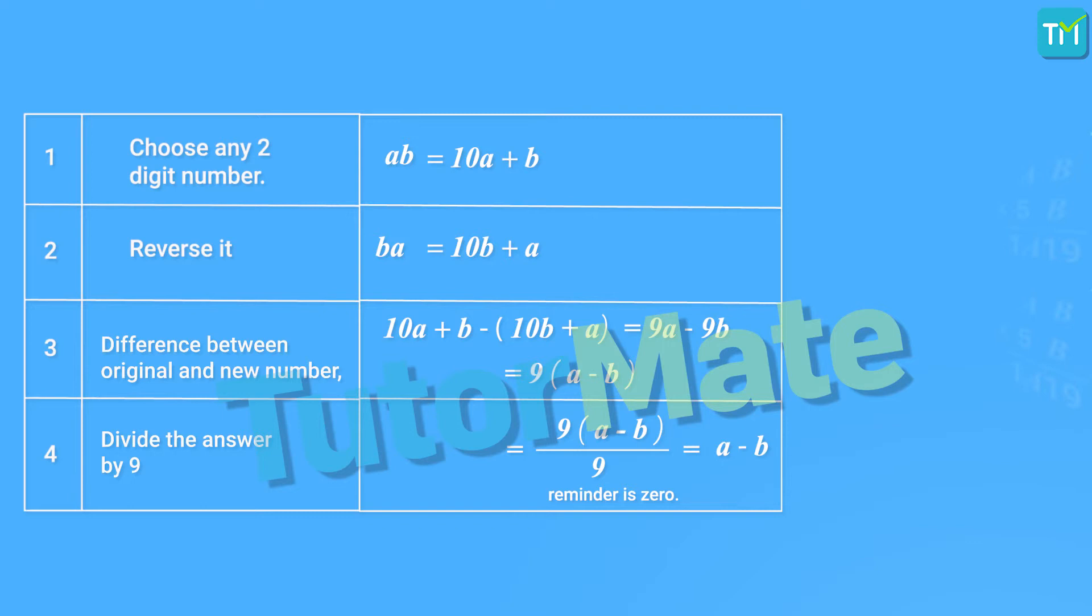But, what if we choose a two digit number where both the digits are the same? Say, we consider the number 66. In this case, the number formed after reversing the digits will again be equal to 66. And so, the difference between the two numbers will be 0. Now, 0 is a number that is divisible by all numbers. So, it goes without saying that it is also divisible by 9. Therefore, in every case, the resulting number will be divisible by 9, which means that the remainder will be 0.